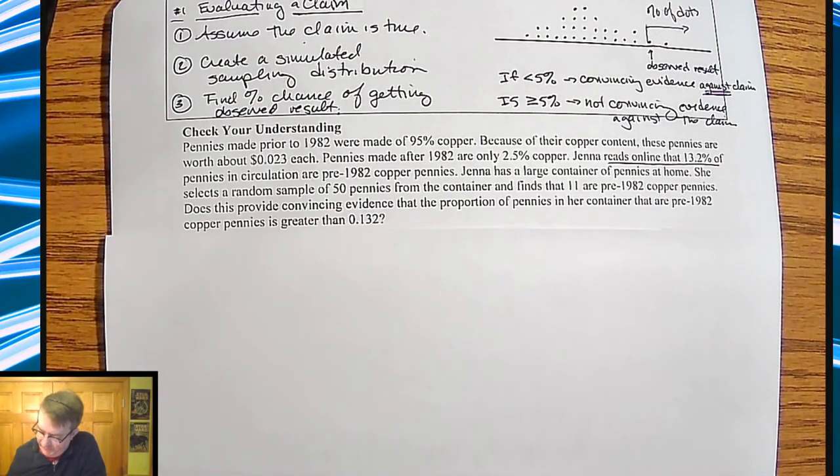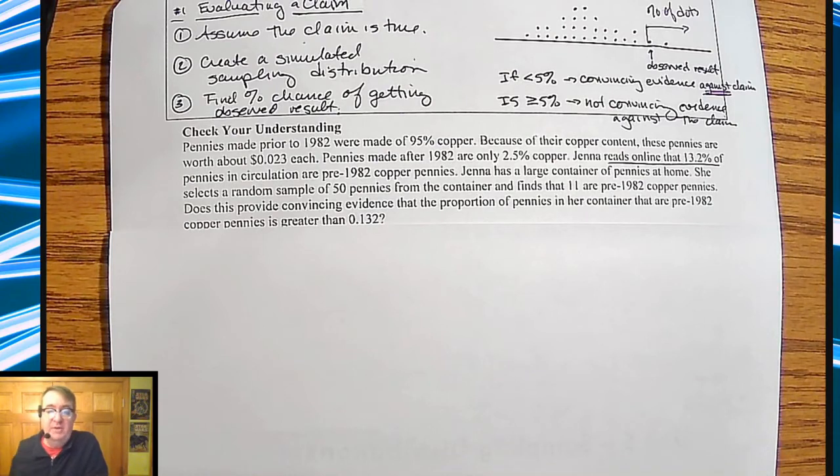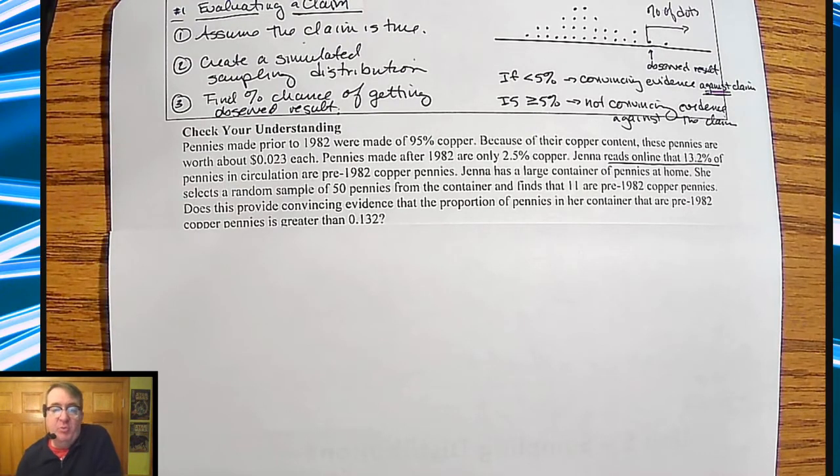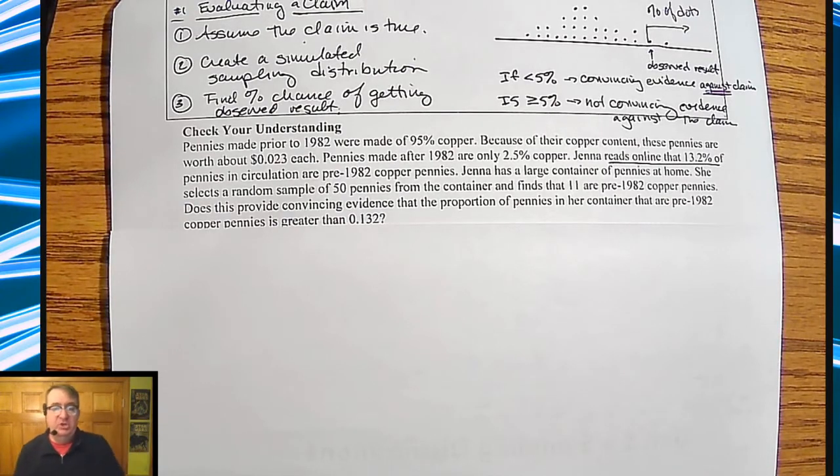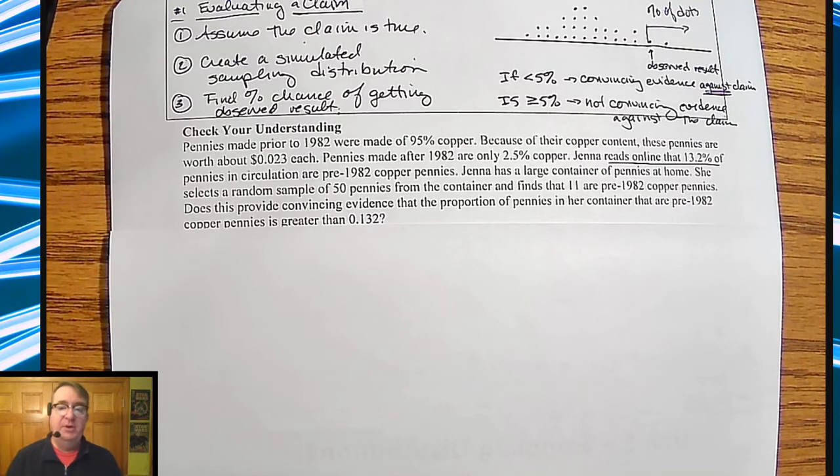Pennies made before 1982 were 95% copper. Because of the price of copper, each penny from before 1982, because of the copper content, is actually worth 2.3 cents. Pennies made after 1982, because they changed it so there's not so much copper, it's only on the outside, there's 2.5% copper there.